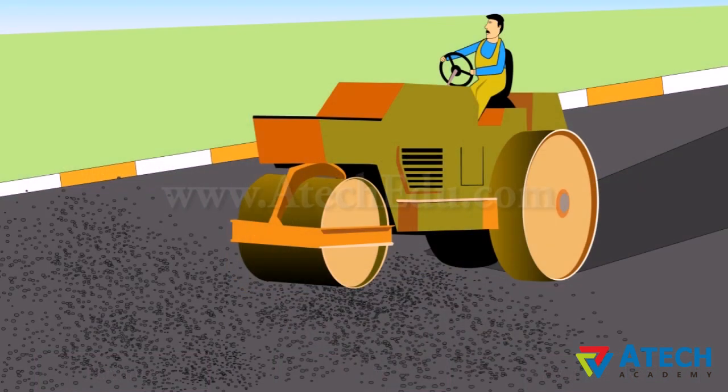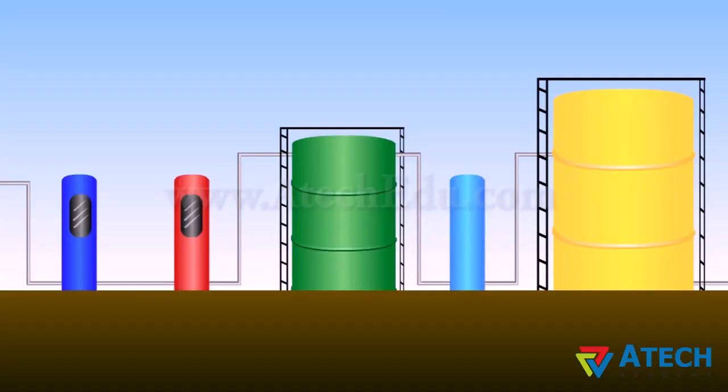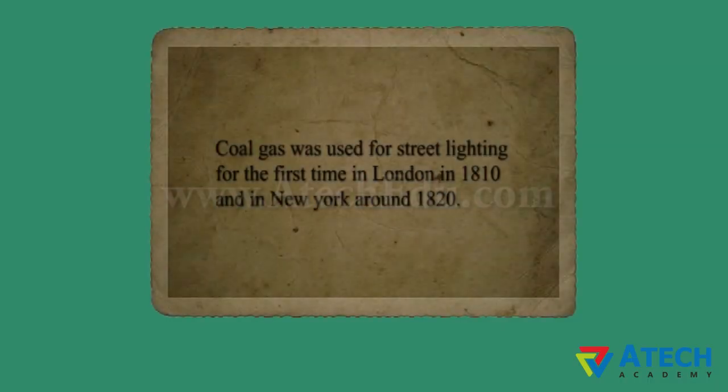Coal gas is obtained during the process of processing coal to get coke. It is used as a fuel in many industries. Coal gas was used for street lighting for the first time in London in 1810 and in New York around 1820. Nowadays, it is used as a source of heat rather than light. Coal is also used massively for generation of electricity in coal power plants.